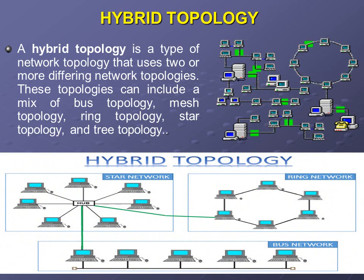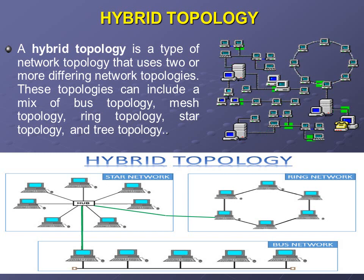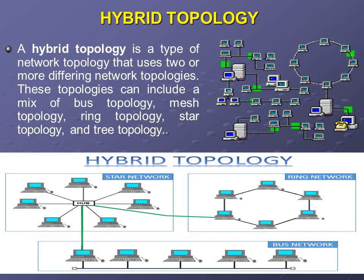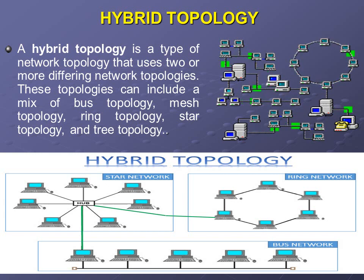The last type is hybrid topology. A hybrid topology is a type of network topology that uses two or more different network topologies. For example, a combination of star, ring, and bus networks together forms a hybrid. These topologies can include a mix of bus, mesh, ring, star, and tree topologies. A combination of all topologies is called hybrid topology. That concludes today's topic.